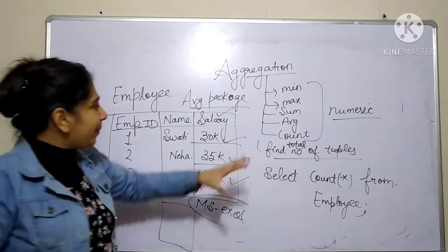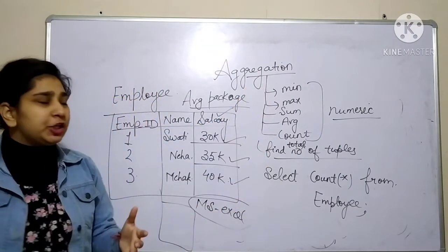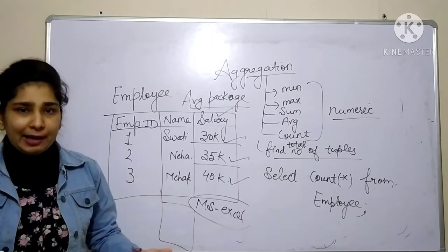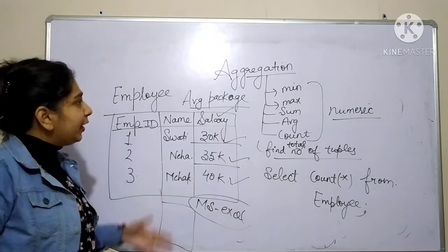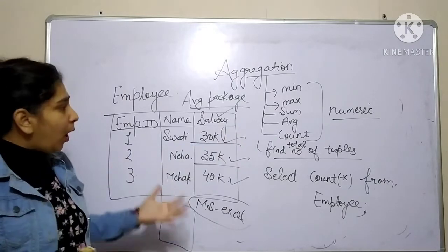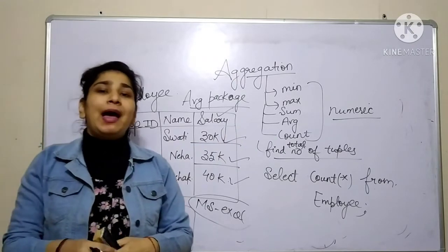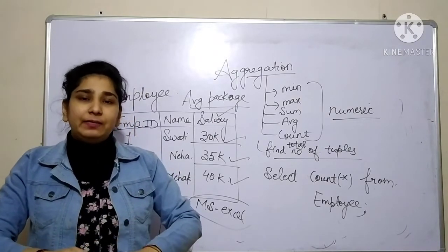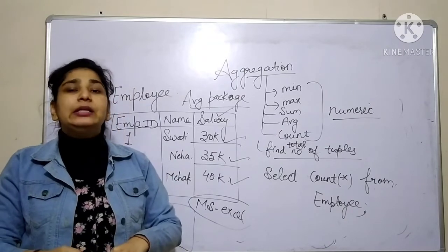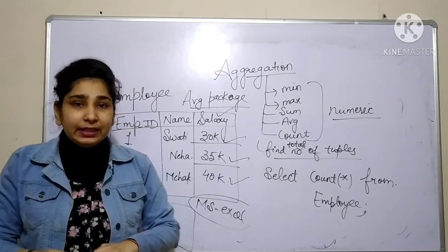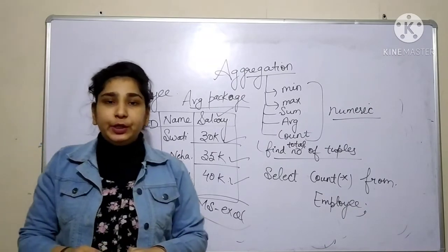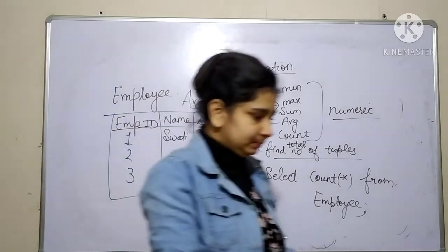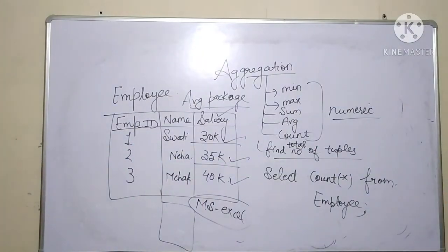These are the basic five aggregate operations — MIN, MAX, SUM, AVG, and COUNT — which we use in day-to-day life. I hope you are clear with all five operations. If you have any query, my email ID is in the description box. If you like the video, please like, share, and subscribe to my channel. Thank you.